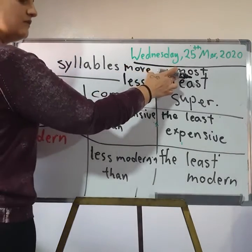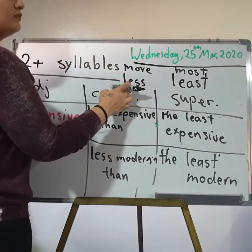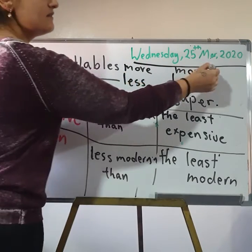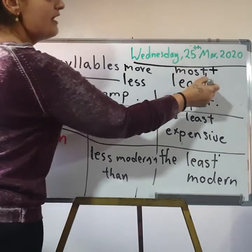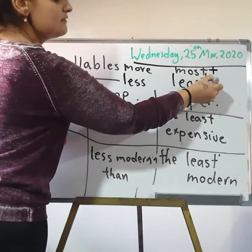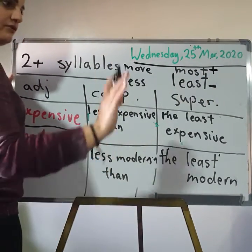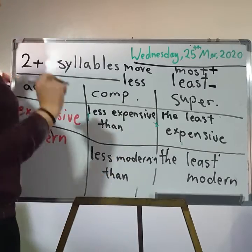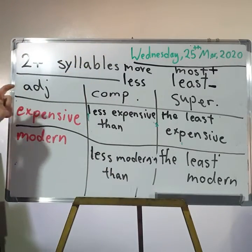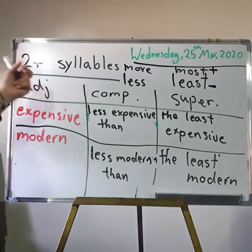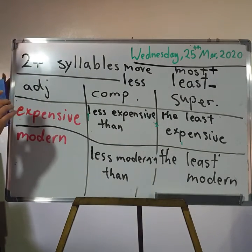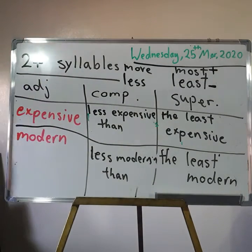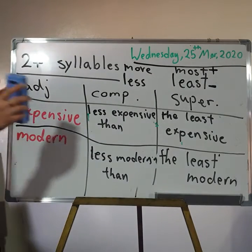I use more and most, and I use less or least. Here it's more, it's over — it's a plus — and here it's minus, if I want to compare between them, if they are less, okay? So, these are the adjectives with two or more syllables, okay?